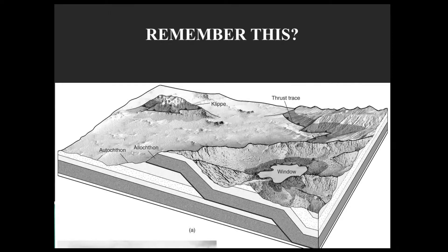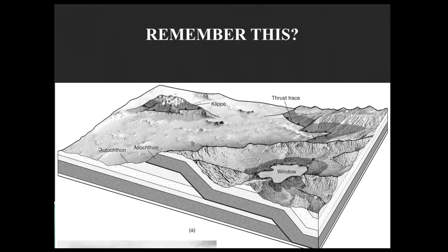They are odd words and a lot of times they can be easily forgotten or mixed up. But here's an idea to make it easier to remember which is which: the autochthon is automatically there all the time because it's not moving. So the autochthon is automatically there — that's the 'auto' part of it. You might not see it if it's covered by the allochthon, but the autochthon is automatically there no matter what.